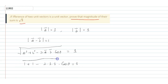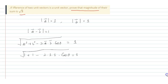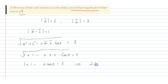So 1 equals 1 plus 1 minus 2 cos theta. Simplifying, 2 minus 1 is 1, so cos theta equals 1 by 2.